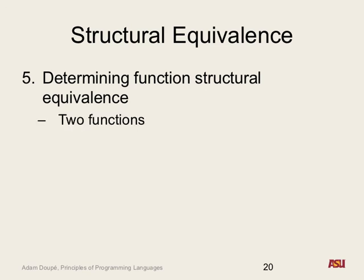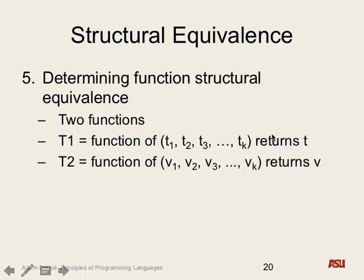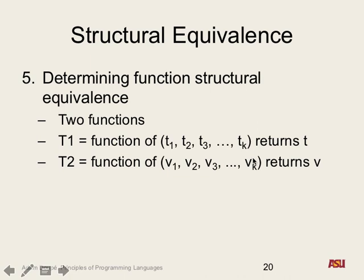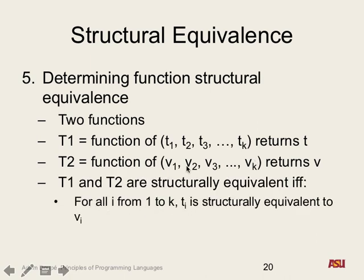The last thing is functional equivalence. Two functions are structurally equivalent if they have the same number of parameters, all the parameter types are structurally equivalent in order, and the return types are structurally equivalent.